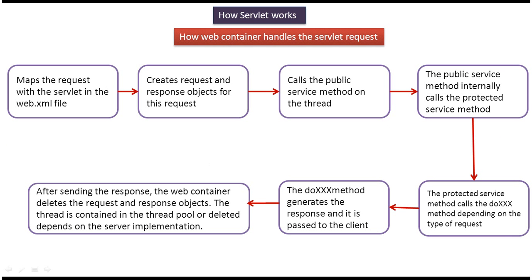Now we will see how the web container handles the servlet request. First, the web container maps the request to the particular servlet in the web.xml. Once the mapping is done, it creates the request and response objects for that request. Then it calls the public service method on a thread. The public service method internally calls the protected service method.